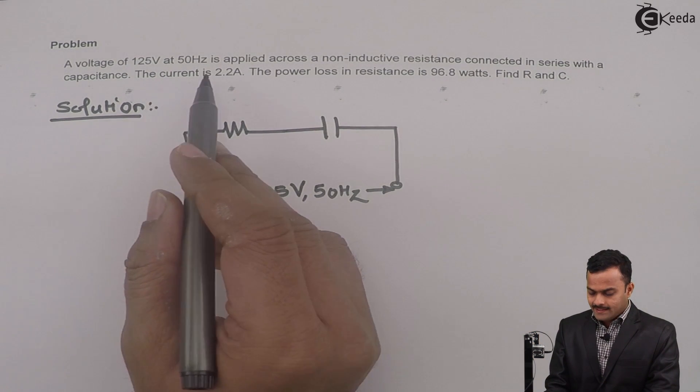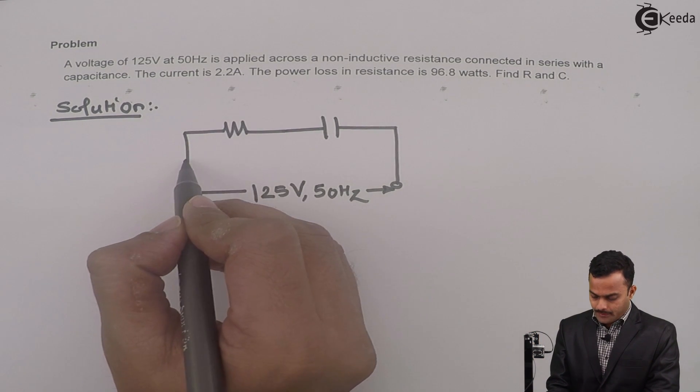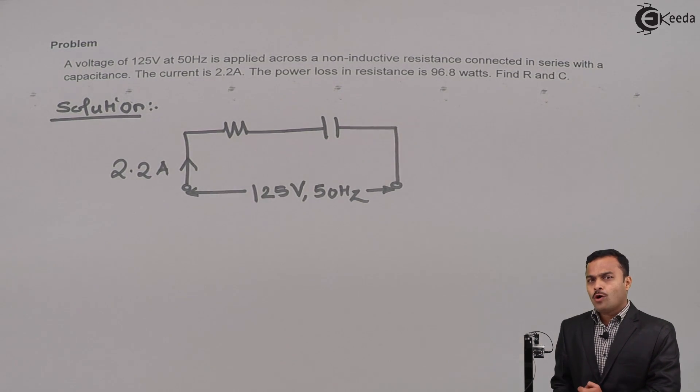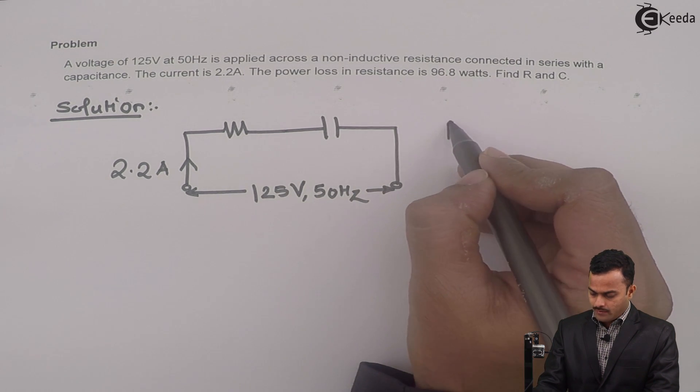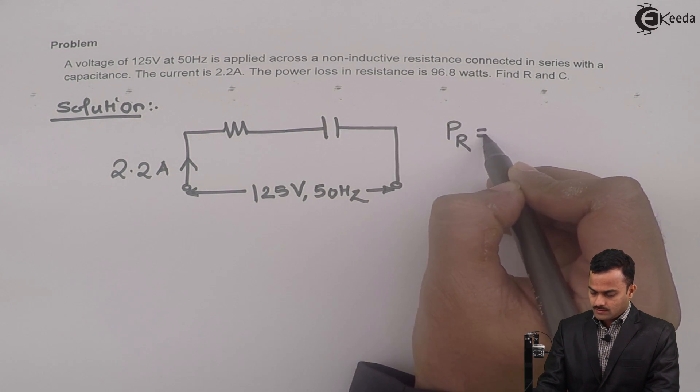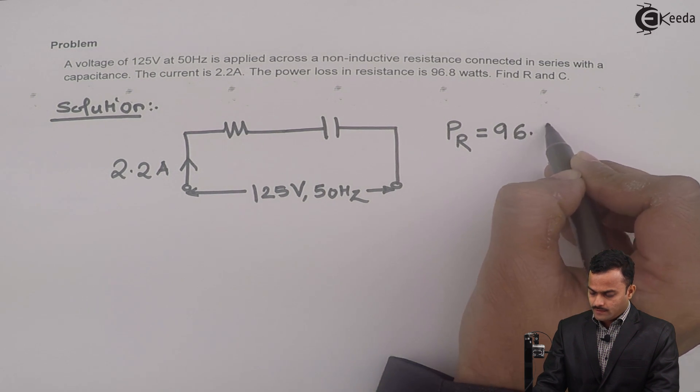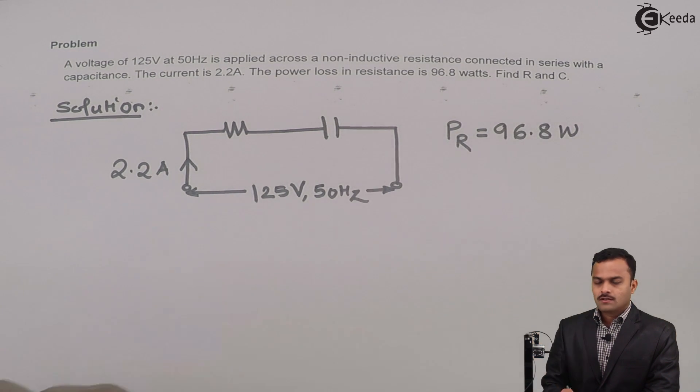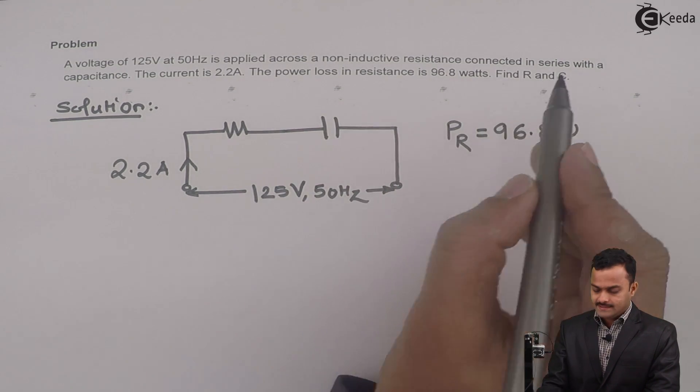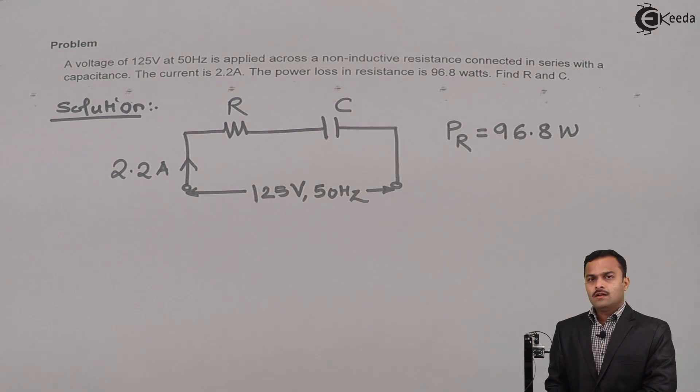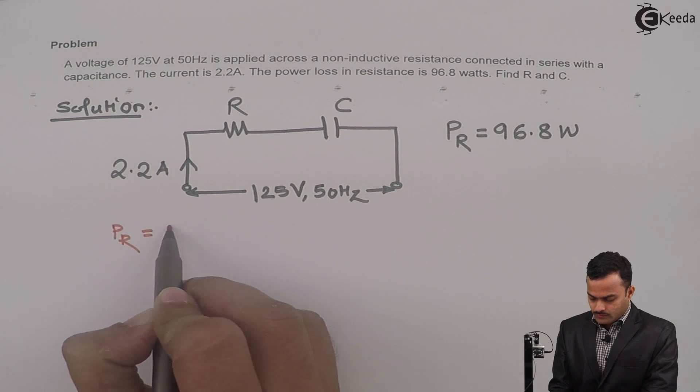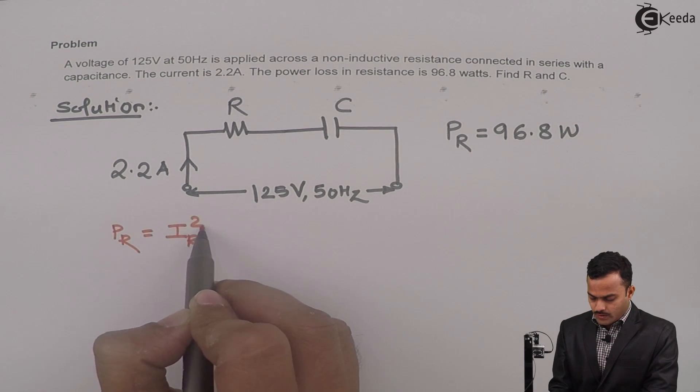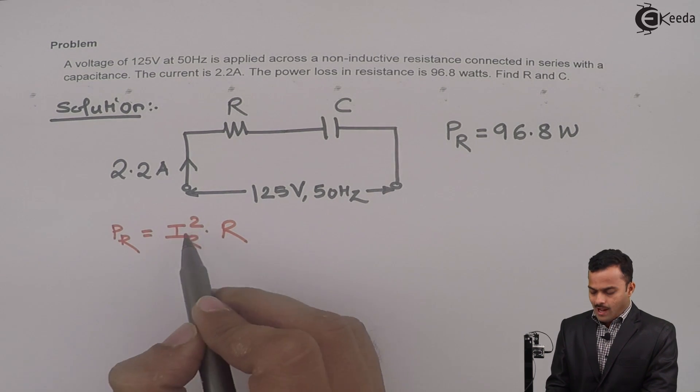It will carry a current of 2.2 ampere. One more thing they have given: power loss in resistance, given as 96.8 watts. And we are supposed to find out R and C. So let's see how to solve. Power taken by resistance is given by PR equal to IR square into R. IR is nothing but current carrying by this resistance, which is 2.2 ampere.